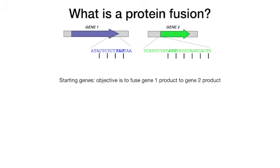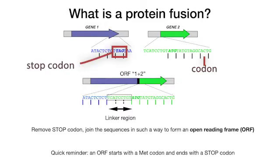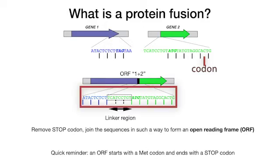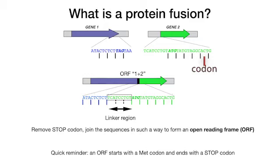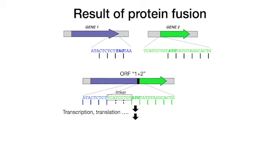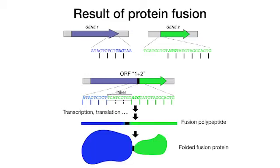Consider gene one and two — each encodes a separate protein. The objective of fusion is to produce a single polypeptide containing both sequences. To do this, we remove the stop codon from the first protein, then ligate that first DNA to the DNA encoding the second protein in such a way as to form a single open reading frame. The result is that the two original ORFs are joined by a linker region. After transcription and translation, a fusion polypeptide is formed. In many cases, both original polypeptides fold to form a structure where the two original proteins are tethered by a linker polypeptide.